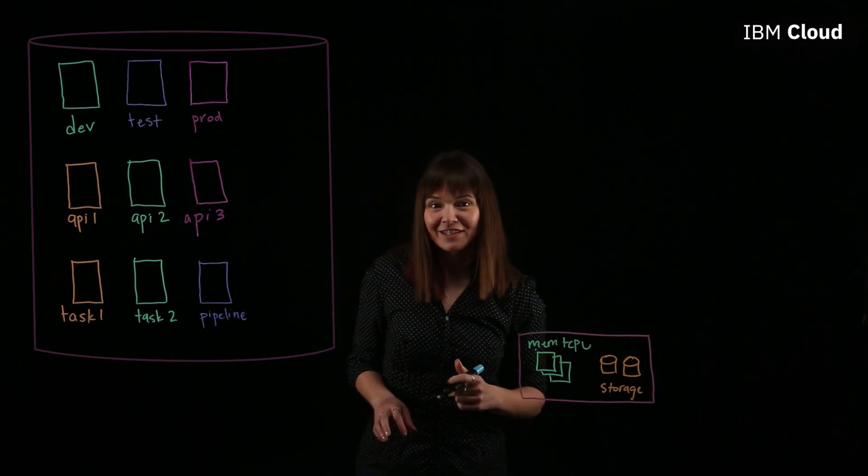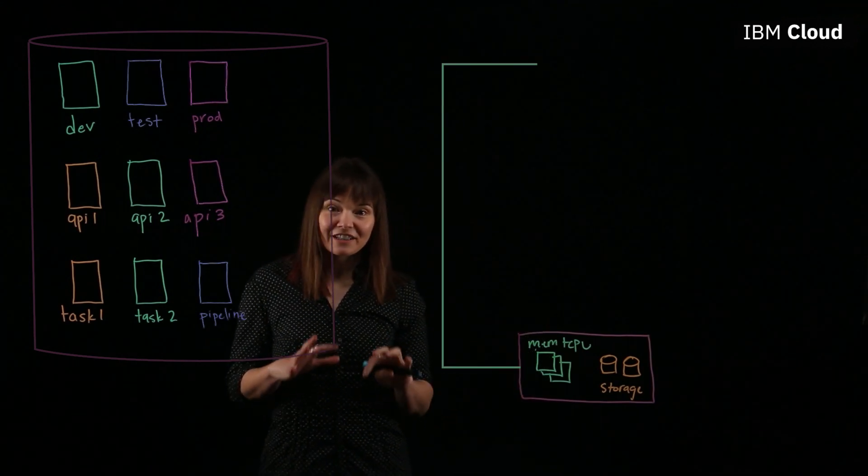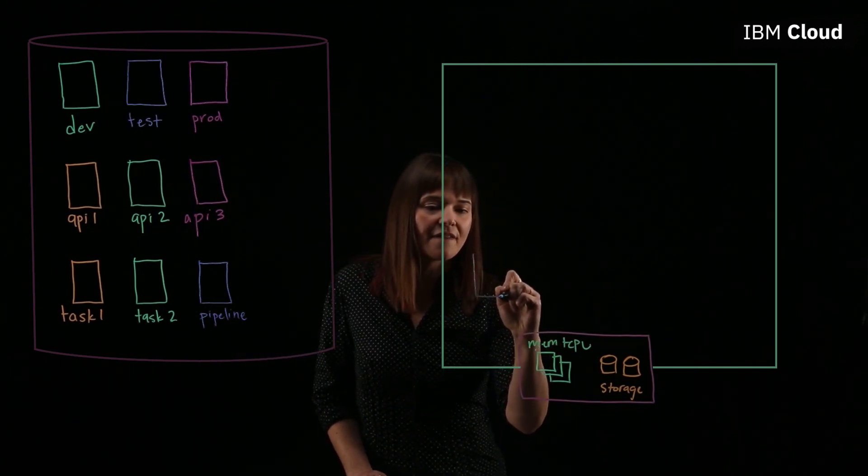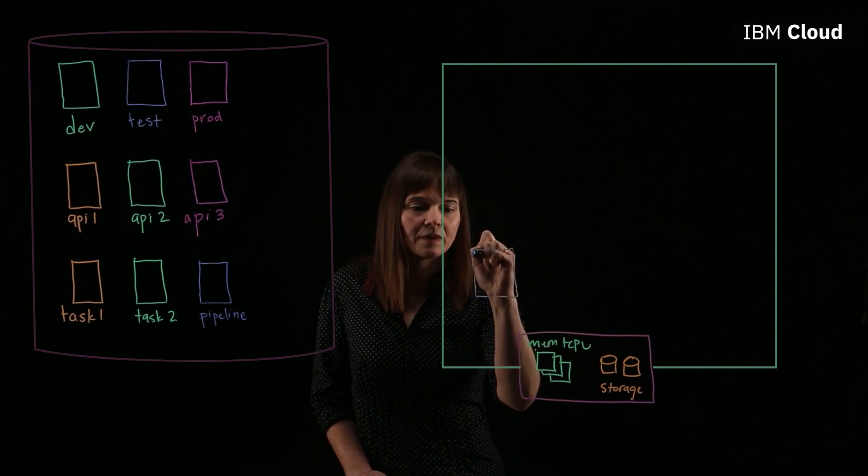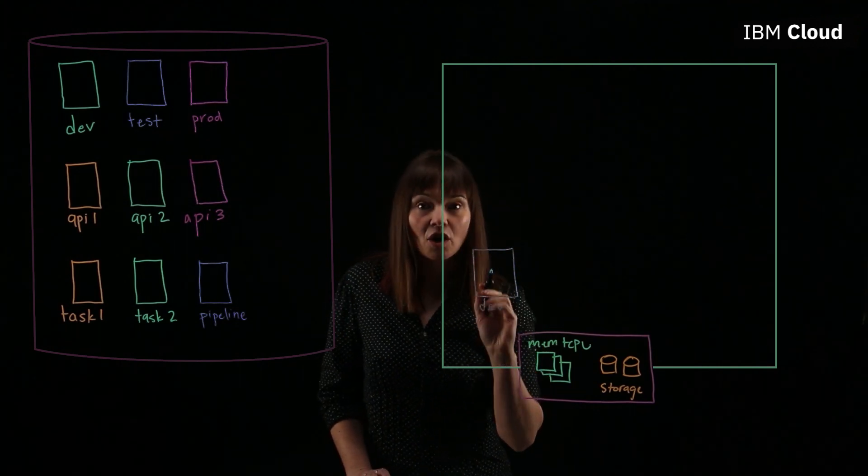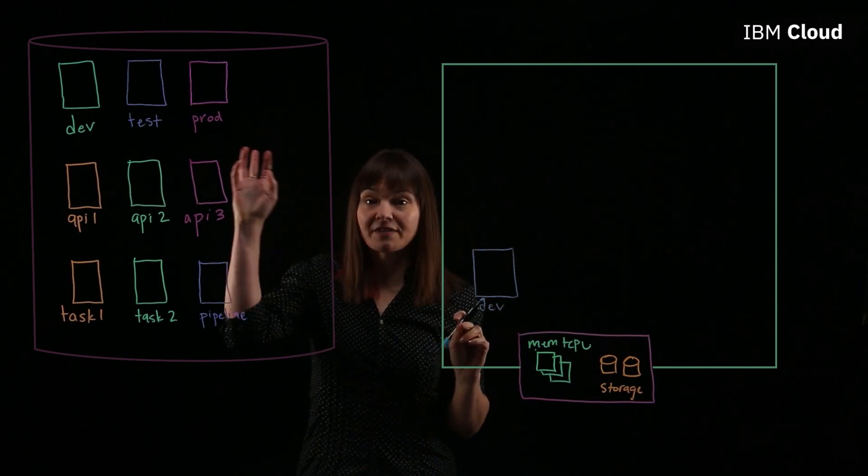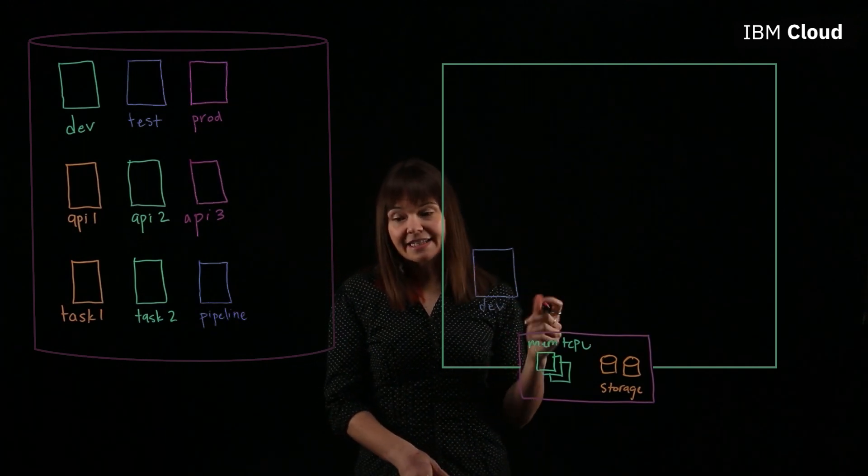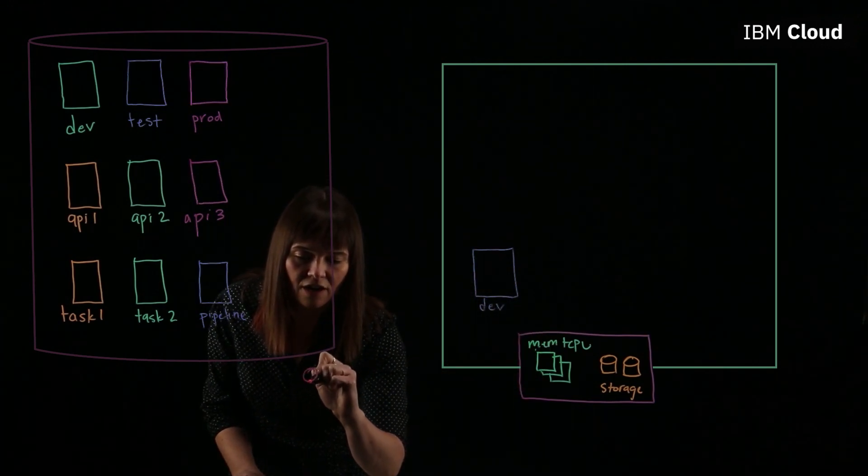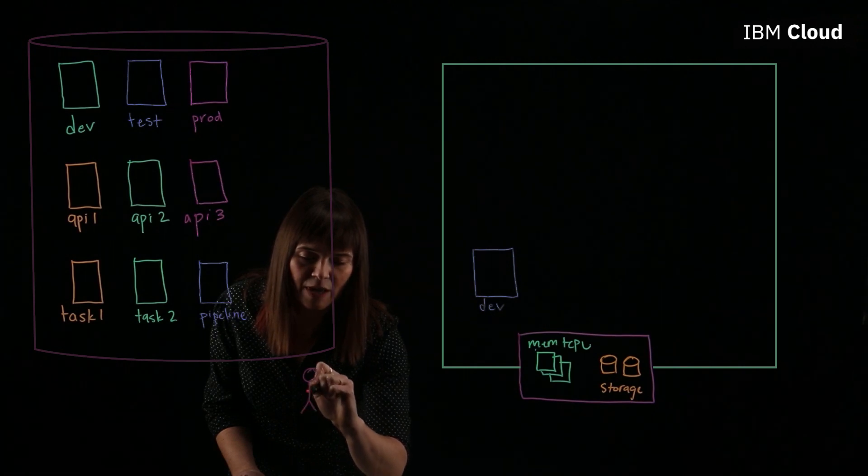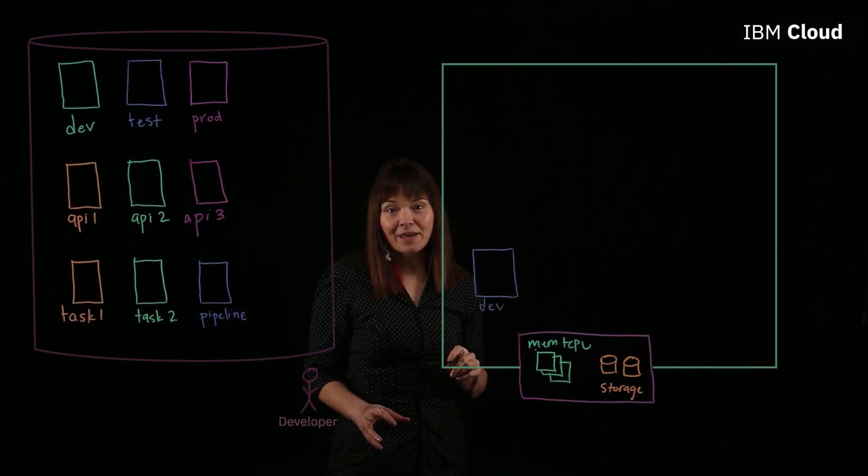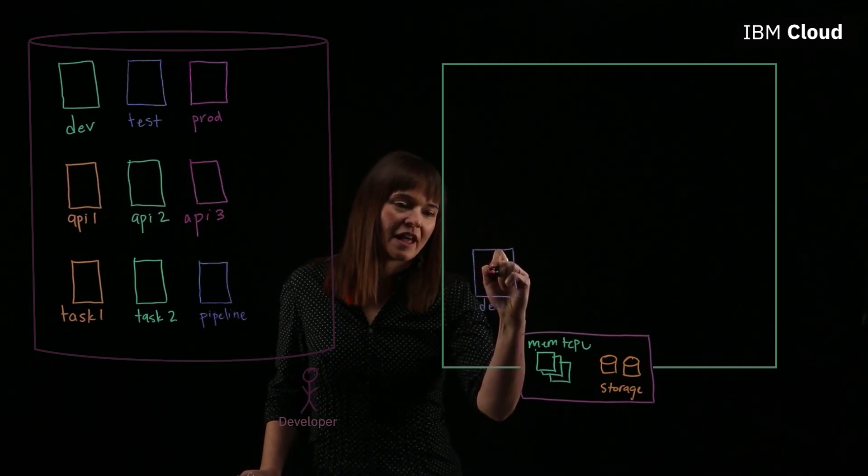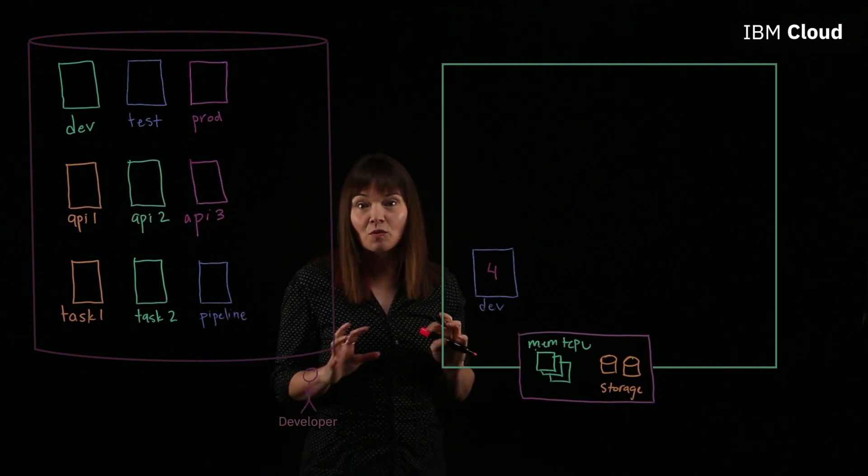And then let's think about where we want to start. Let's start with our development environment. So we'll build the development environment in our cluster, and that's going to be built according to the definition and specifications we've already defined in our repository. So let's say we have a developer working on a new API that very cleverly is going to be called API 4, and the developer is using our dev environment to work that out.